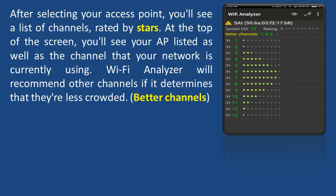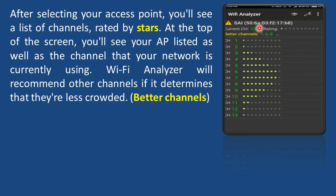After selecting your access point, you will see a list of channels rated by stars. At the top of the screen you will see your access point listed as well as the channel that your network is currently using, along with the rating for the selected channel. Wi-Fi Analyzer will recommend other channels if it determines that they are less crowded. In this example, channels 7, 6, and 8 are better compared to channel 13 for the access point.